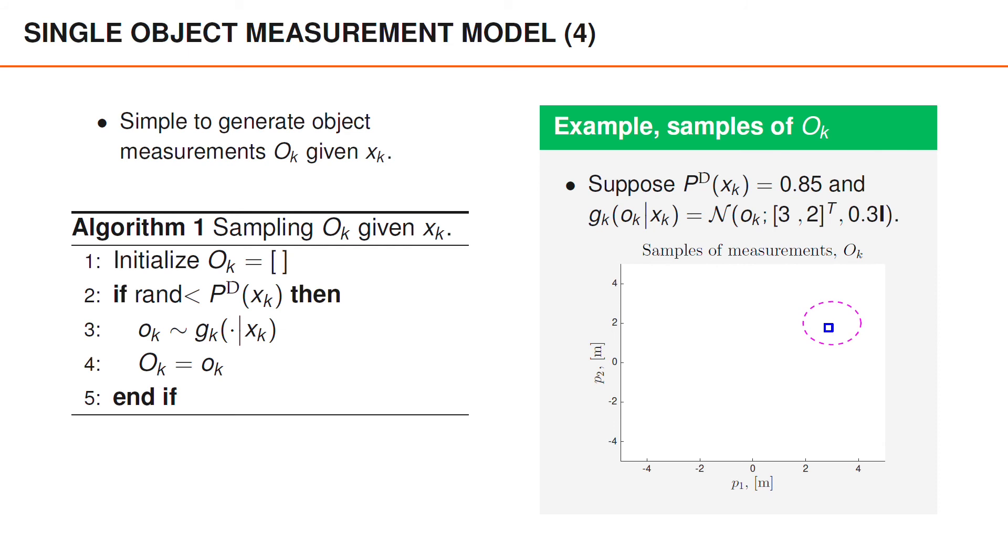Another way to gain intuition for a distribution is to look at samples from the distribution. Let us therefore consider a specific example and generate a few samples. In this example, we assume that the probability of detection is 0.85 and that the spatial pdf of the object measurements is Gaussian with mean (3,2) and covariance matrix 0.3 times the identity matrix. We have illustrated this pdf using a circle in this figure. If we look at samples from this distribution, we can see that the matrix normally contains a measurement and that the measurement vector appears in the vicinity of the mean vector, (3,2).